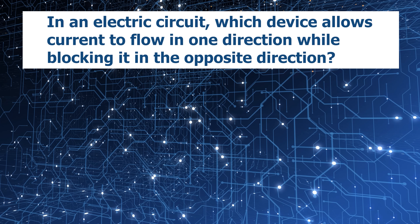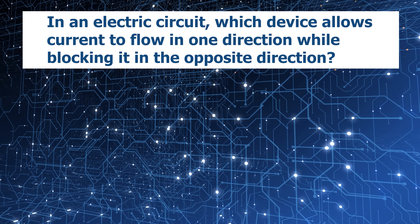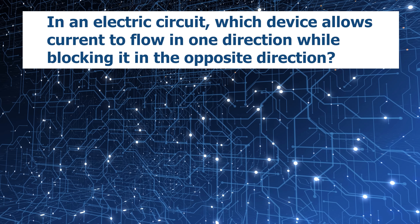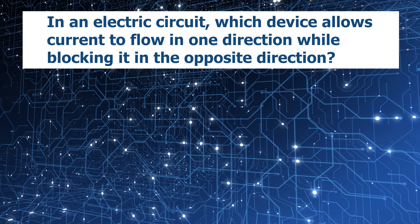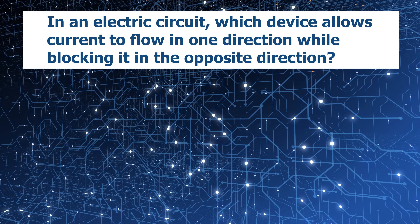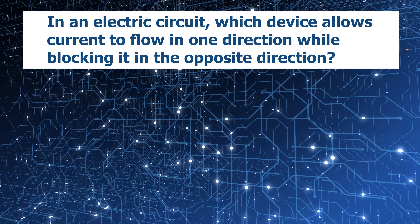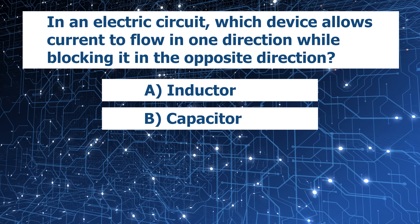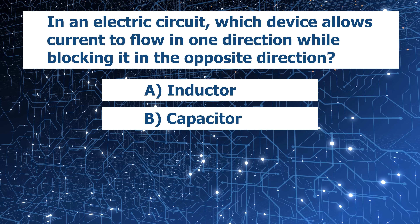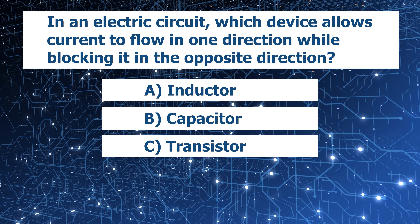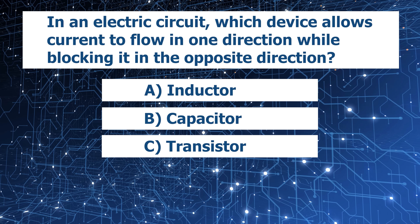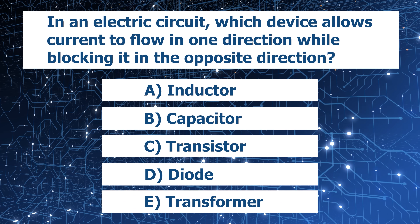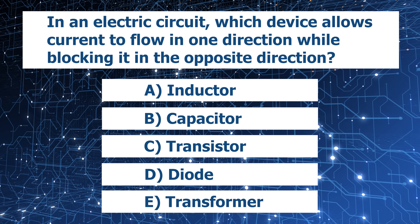In an electric circuit, which device allows current to flow in one direction while completely blocking it in the opposite direction? Is it A, an inductor? B, a capacitor? C, a transistor? D, a diode? E, a transformer?